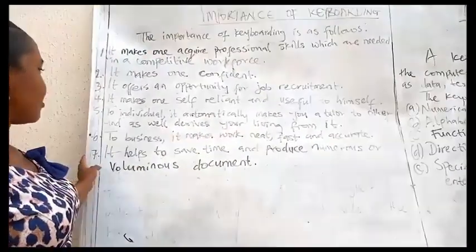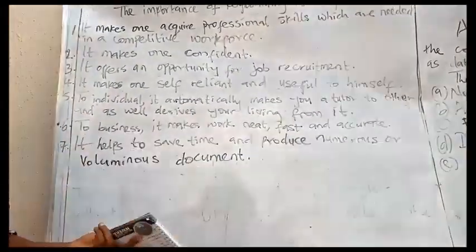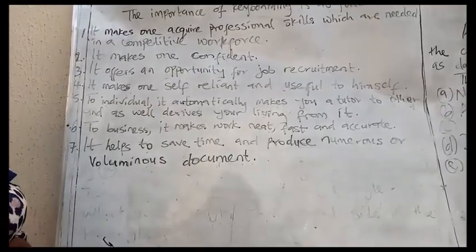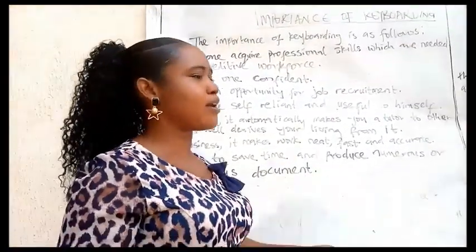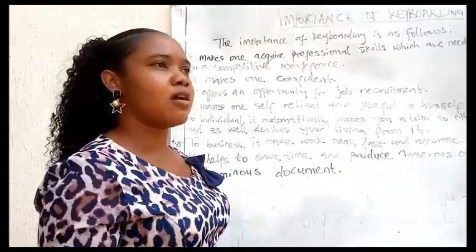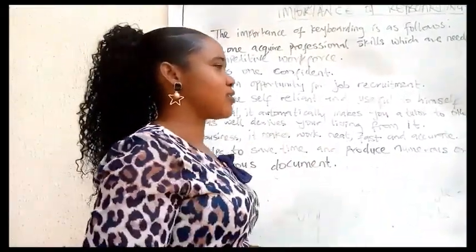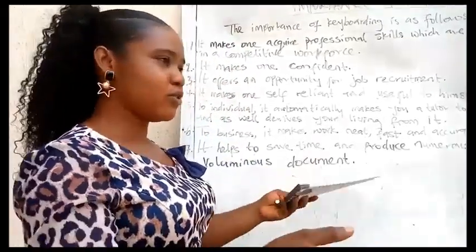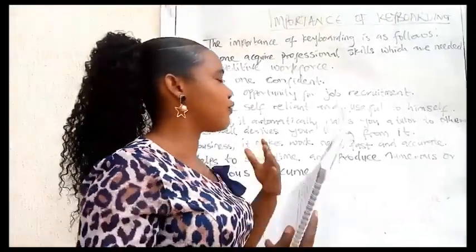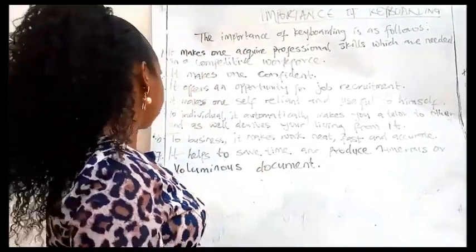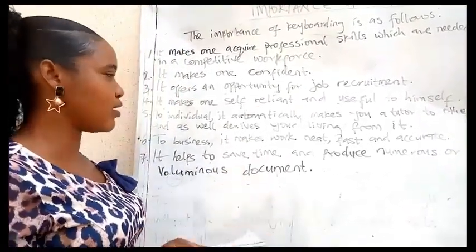Number six, to business, it makes work neat, fast and accurate. During this pandemic period, some of you have visited Shoprite, urban stores and other supermarkets. After selecting your goods, they will check it. You see those workers — they have their laptops, operating their keyboard to calculate. It makes it so fast and accurate. Now, when you type a mistake, you can easily erase it and re-type.